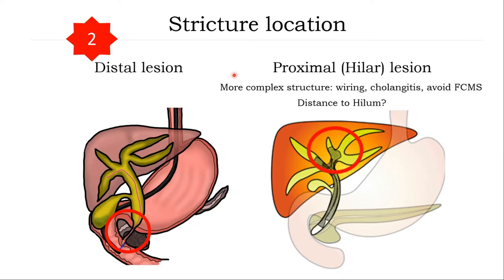Stricture location is also important for diagnosis and planning of treatment, especially for hilar block because of the difficulty in wire access and risk of cholangitis.